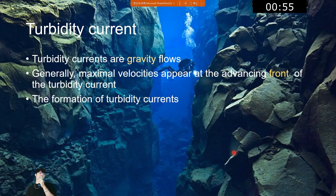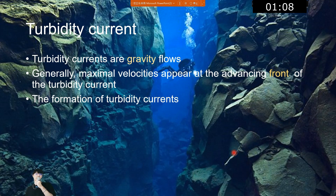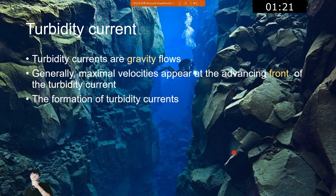What is a turbidity current? Turbidity currents are gravity flows, and generally maximum velocities appear at the advancing front of the turbidity currents. The formation of turbidity currents can be triggered by any mechanism that introduces lots of sediment into seawater, such as river inputs, landslides, earthquakes, and storms.